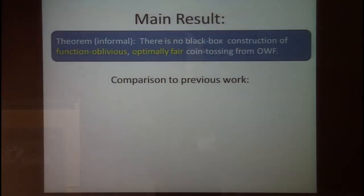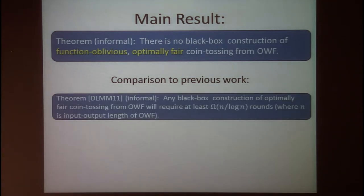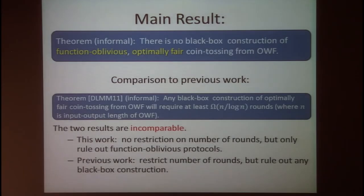Comparing to previous work: in our prior work we showed that any black box construction of optimally fair coin tossing from one-way functions requires at least n over log n rounds, where n is the input-output length of the one-way function. The two results are incomparable: this work places no restriction on the number of rounds but rules out only function oblivious protocols, while the previous work restricted the number of rounds but ruled out any black box construction.